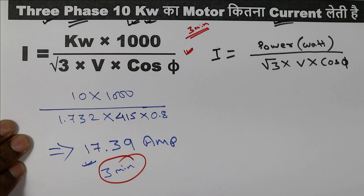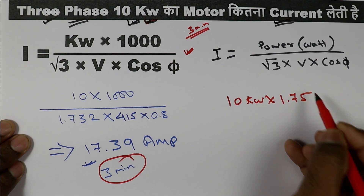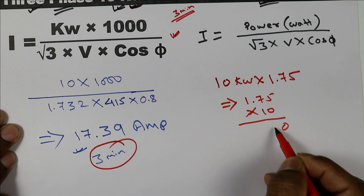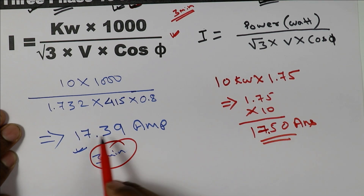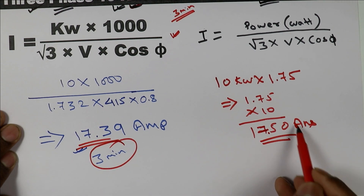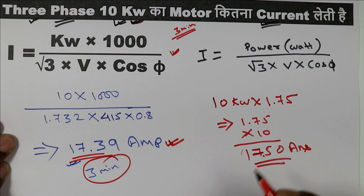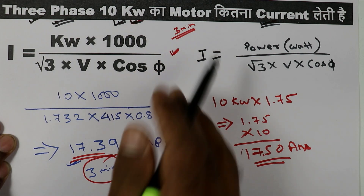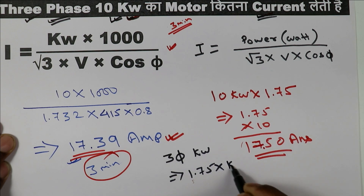In an interview, to save time, what you can do is simply multiply the kilowatt value by 1.75. When you multiply 10 kW by 1.75, you get 17.50 ampere. You can see the exact answer was 17.39 and here we got 17.5 — approximately the same. In an interview, they will never ask for the accurate value, so your answer will be considered right. From today, for any 3-phase motor with power rating in kilowatt, just multiply kW by 1.75 to get the current rating.